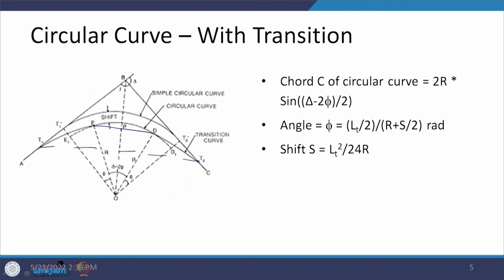The chord C of the circular curve is 2R multiplied by sin((delta - 2*phi)/2), where phi is half the length of the transition curve Lt/2 at a distance of (R + S/2). The shift S is given by Lt squared divided by 24R. This is how we calculate the various elements when a transition curve is provided along with the circular curve on either side.